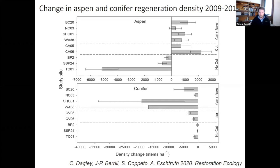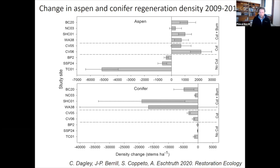At the bottom we have the conifer graph. We don't want conifers because they're the ones invading and replacing the aspen. We're seeing a consistent decline in conifer in the treated stands, and a lot of variability with wide error bars in the untreated stands. We think the slight decline in untreated stands is because the study period — 2009 to 2015 — encompasses the regional drought.